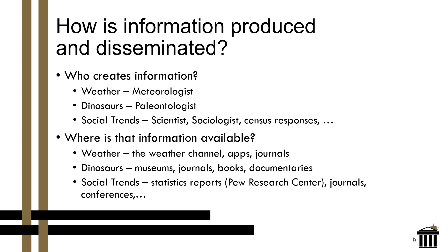First, we want to think about how information is produced and disseminated — who creates information. Based on the topic that you're looking at, different people in different fields will create information that pertains to that topic. For example, for weather, you will usually have meteorologists. For dinosaurs, it would be paleontologists. For social trends or other more broad topics, you may have many people involved — scientists, sociologists, and census responders all help to create information depending on certain social trends, and that's true for a wide variety of topics.